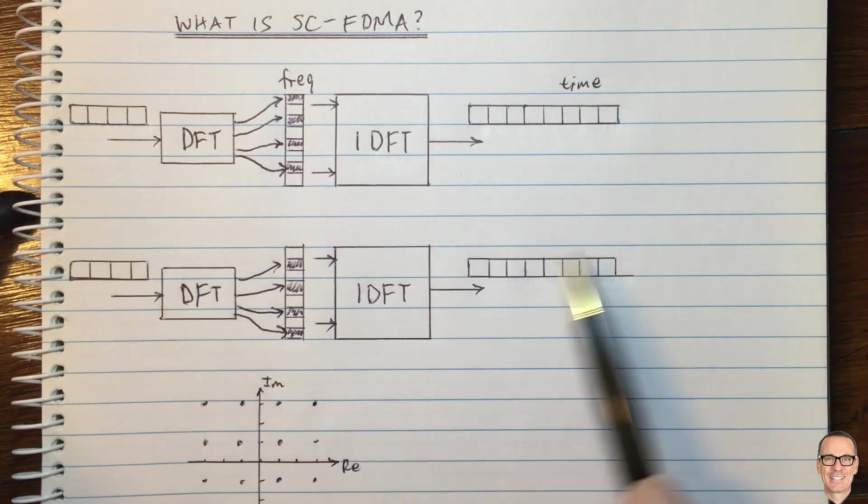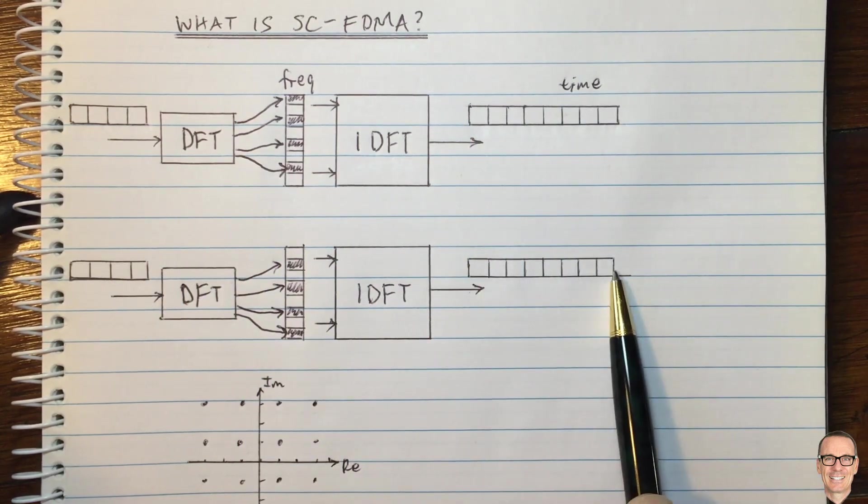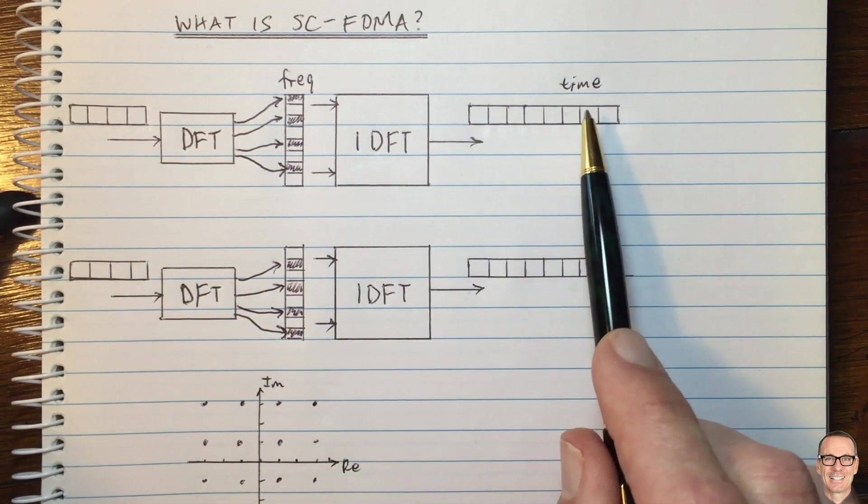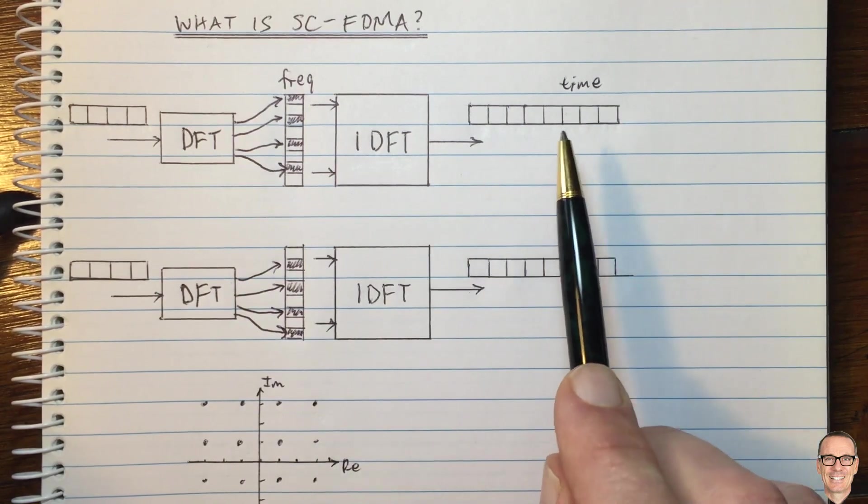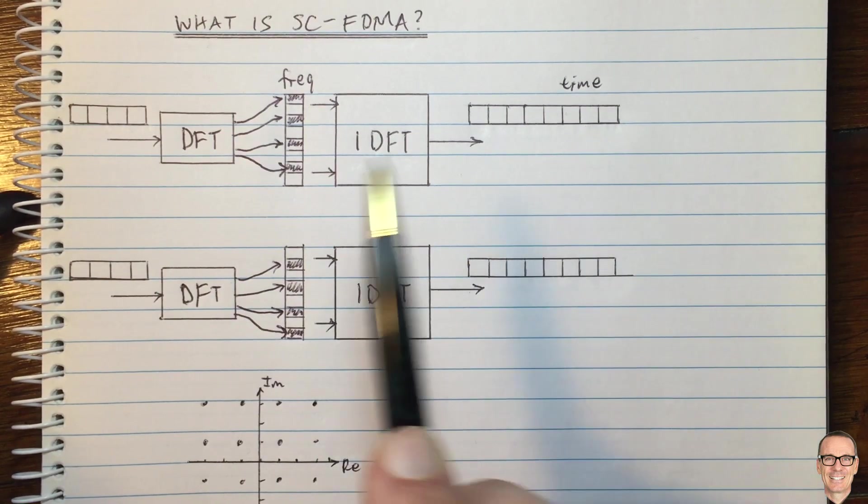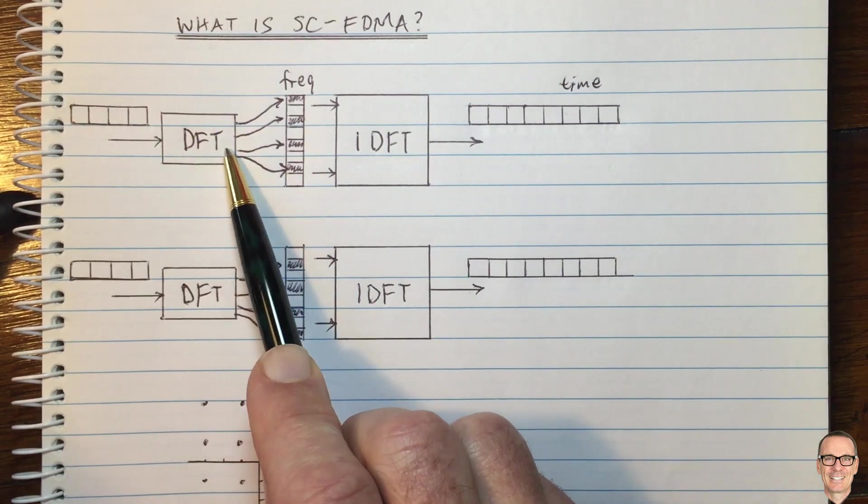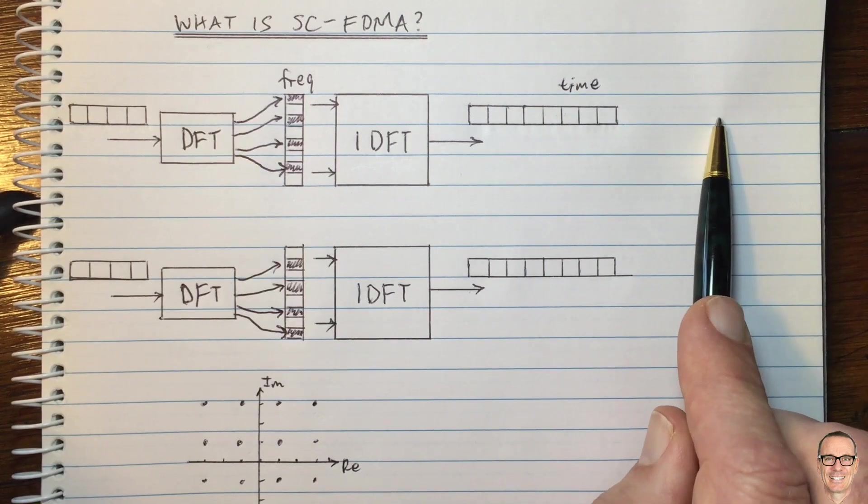So why can't we just do this on the downlink as well? If we get a sequence which has finite peak to average ratio, we could surely just do the same thing on the downlink. So why don't we do that? Well, the reason for that is to do with the receiver. I haven't mentioned it yet, but by doing this linear pre-coding, you have to undo the linear pre-coding at the receiver.